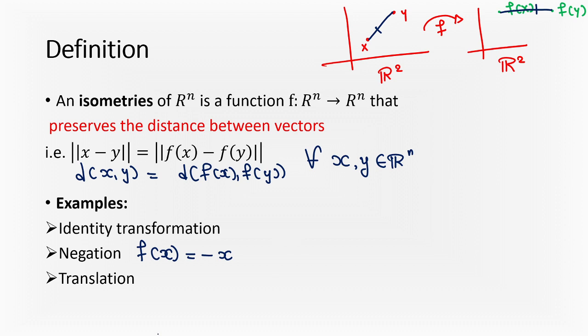And the third is the translation. What do I mean by translation? Let me try to prove this translation part. Translation means you are just translating every vector. For example, suppose I define my f(x) = x + a, where a is some fixed vector. So I am translating every vector by a.